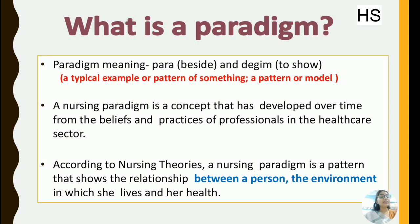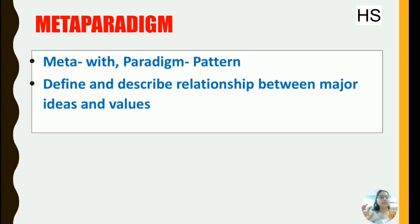In nursing, the paradigm is divided into four parts: person, environment, nurse, and health. These are patterns showing how and why things occur. Another term is meta-paradigm — involvement of all these elements together. A meta-paradigm defines and describes the relationship between the major ideas and values. The nursing meta-paradigm has four main components.